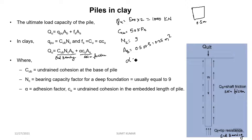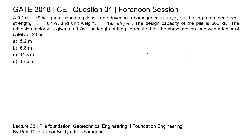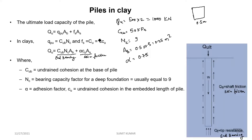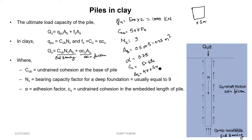Alpha is given as 0.75. Since the clay is homogeneous, Cu is again 50 kilo Pascal. The surface area A_s of the pile equals perimeter times length. The perimeter is 4 times the side, which is 4 × 0.5 = 2 meters, so A_s = 2L, where L is the length of the pile.